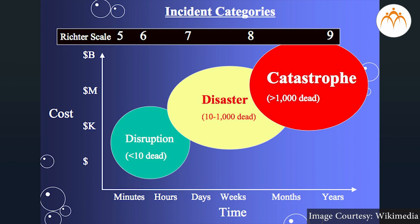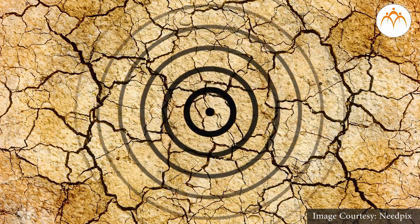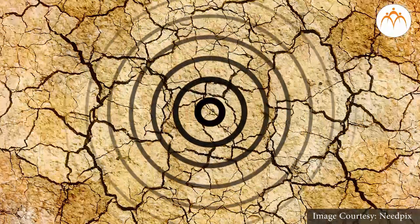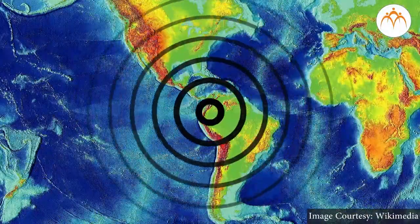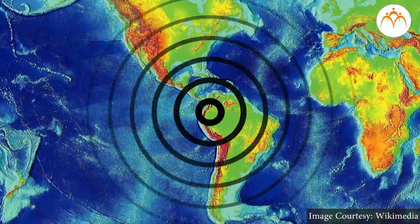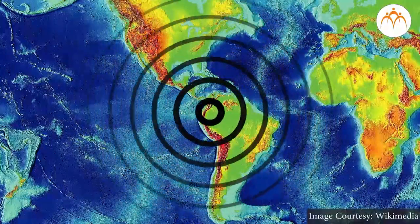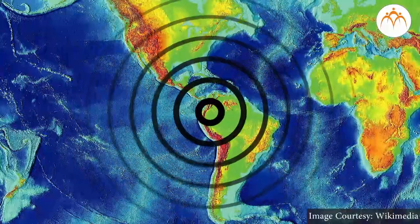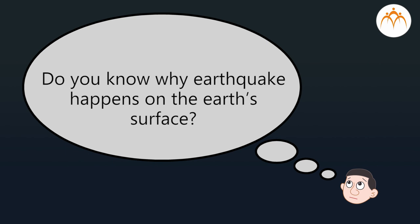These earthquakes are recorded on the seismometer or seismograph. An earthquake is measured on the Richter scale. The seismograph can be used horizontally or vertically. The seismic waves shake the earth as they move through it, and when the waves reach the earth's surface they shake the ground and anything on it, like our houses and us.